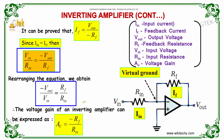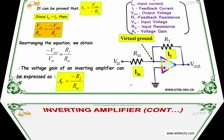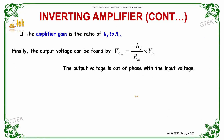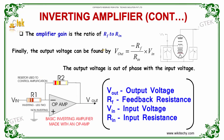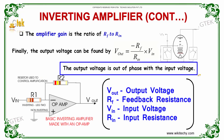Therefore, the voltage gain of an inverting amplifier can be expressed as A_V equals minus R_F divided by R_N. The amplifier gain is the ratio of R_F to R_N. Finally, the output voltage can be found by calculating V_out equals minus R_F divided by R_N multiplied by V_in. From this we can say that the output voltage is out of phase with the input voltage.